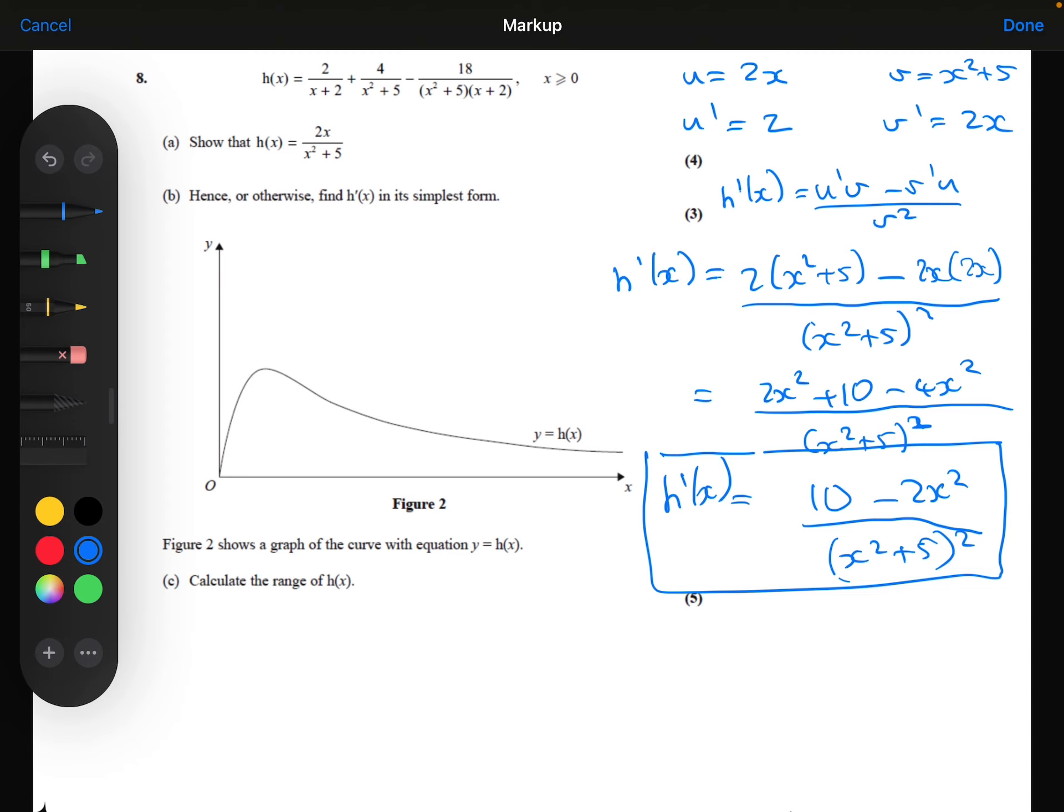We're then shown figure 2, which shows a graph of the curve with the equation y equals h of x. And part C says to calculate the range of h of x. Range is the set of y values that this can possibly be.